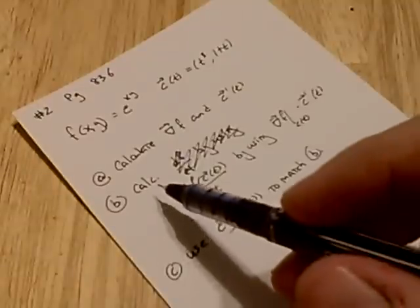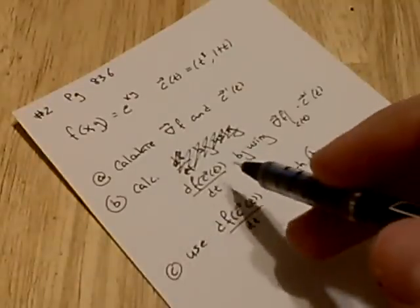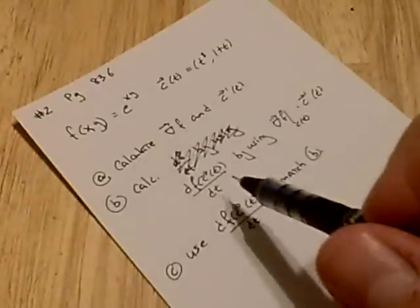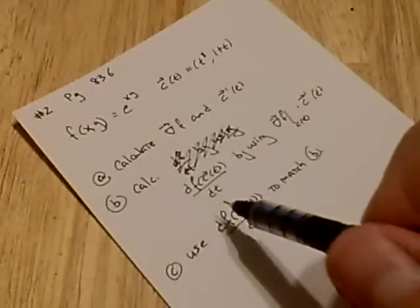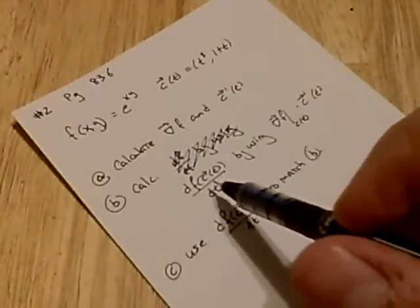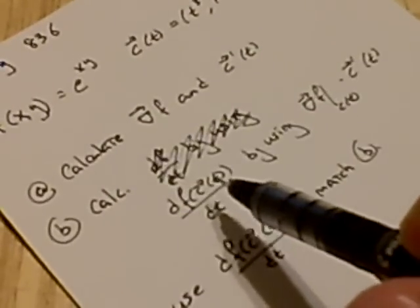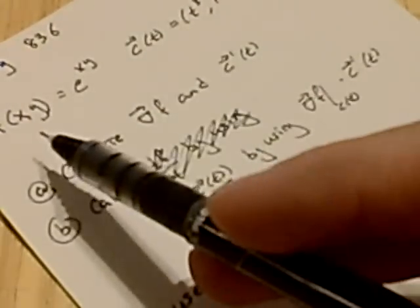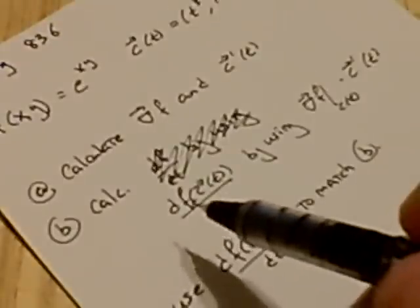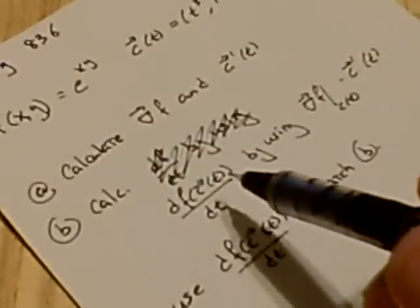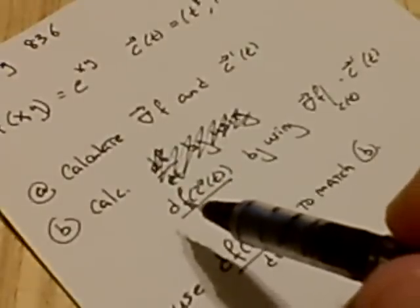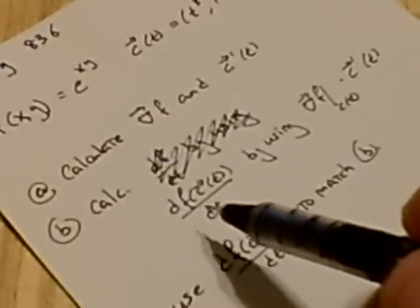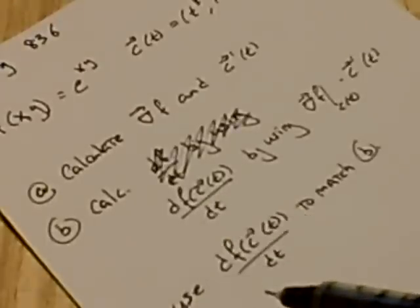Then to calculate two different ways the rate of change of the composite function with respect to t. Remember the composite function, there's this curve and this function of space and we're looking at the values of the function restricted along that curve. We're asking the question, how do the values of that function change as you move along that curve?